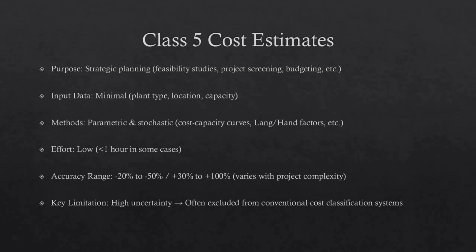Typical accuracy ranges for Class 5 estimates are minus 20% to minus 50% on the low side and plus 30% to plus 100% on the high side, depending on the technological complexity of the project, appropriate reference information, and the inclusion of an appropriate contingency determination. Ranges could exceed those shown in unusual circumstances.